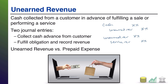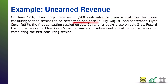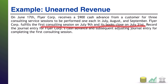On June 17th, Flyer Corps receives a $900 cash advance from a customer for three consulting service sessions, each to be performed in July, August, and September. Notice: getting paid in June, not doing the job until July, August, and September — a classic cash advance scenario. Flyer Corps fulfills the first consulting session on July 9th, and its books close on July 31st.